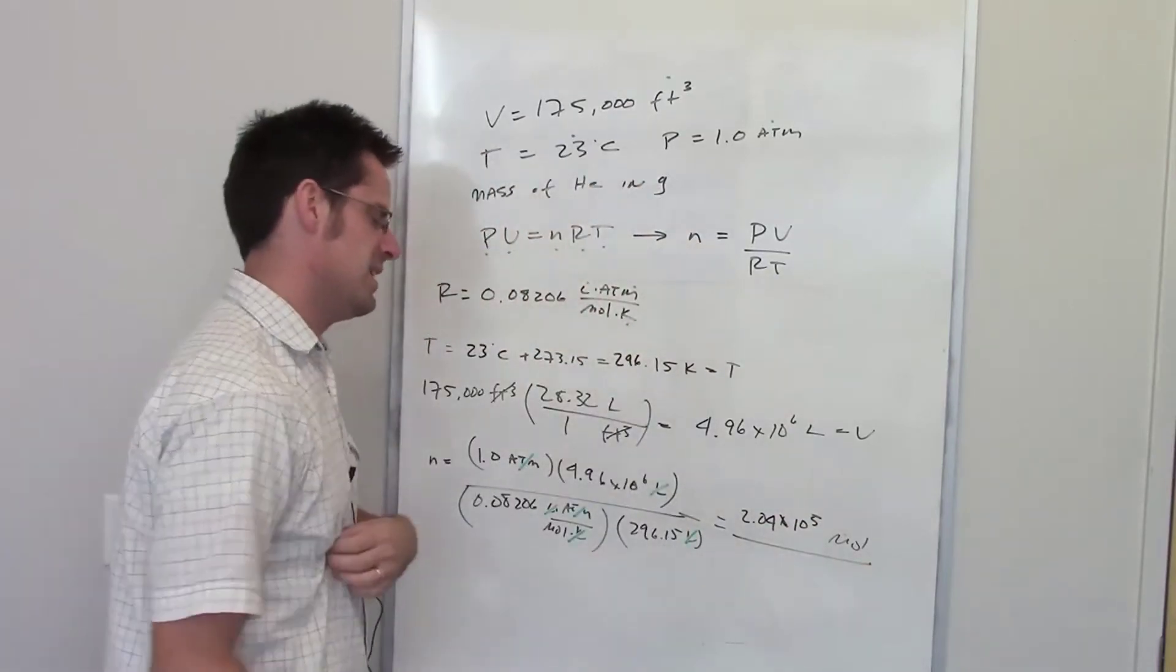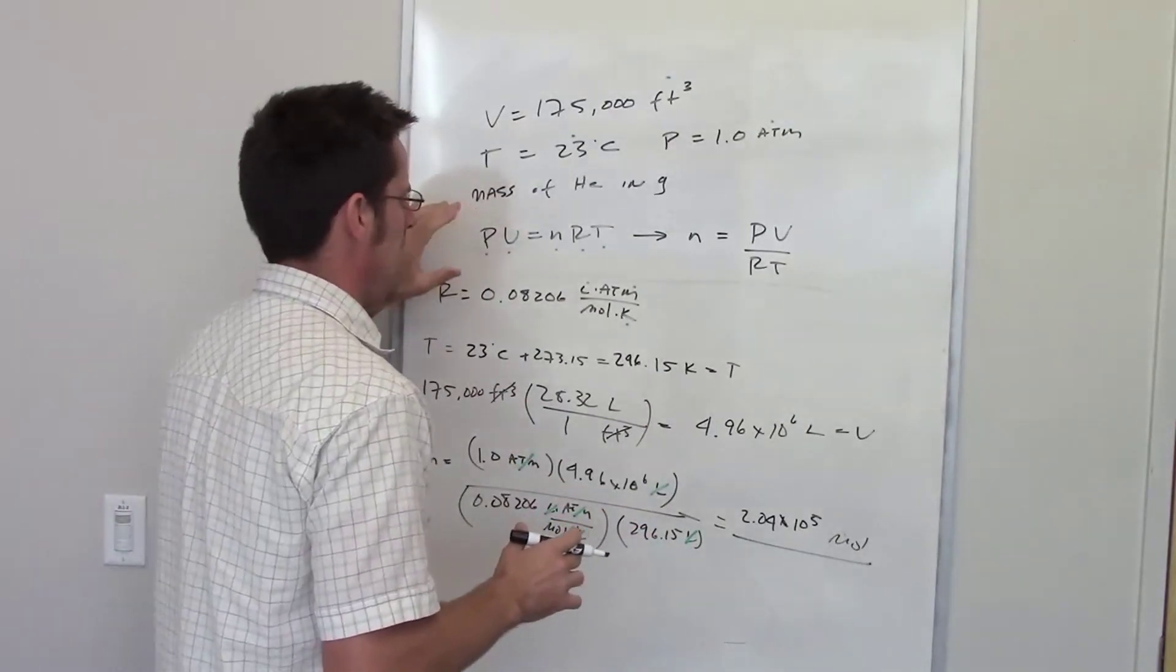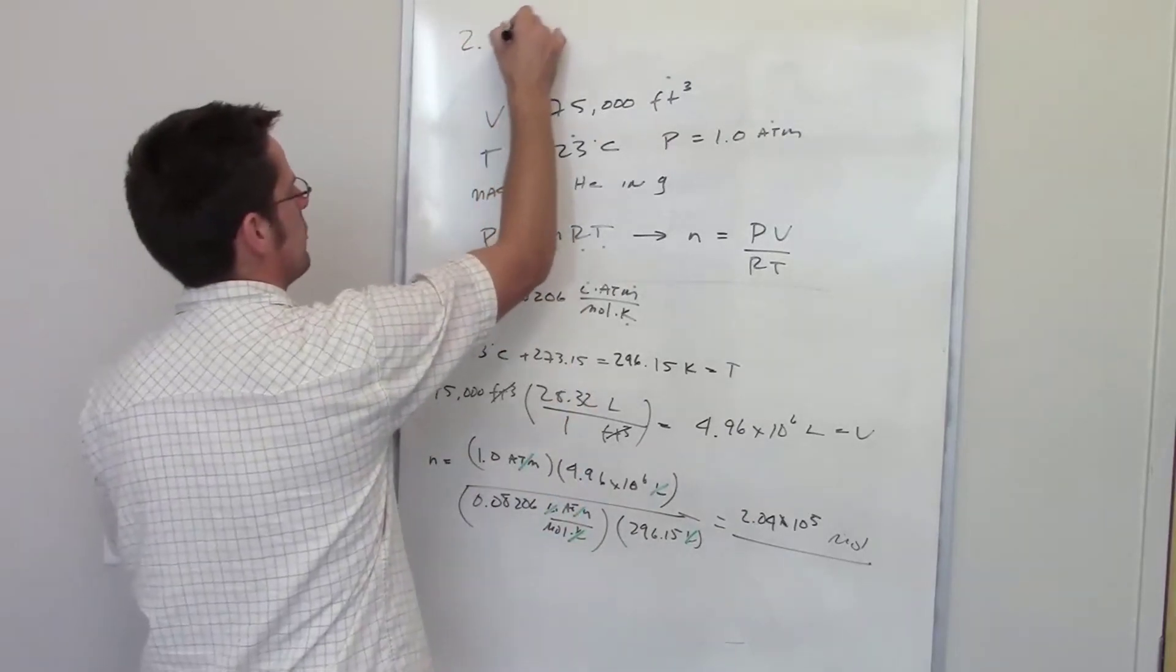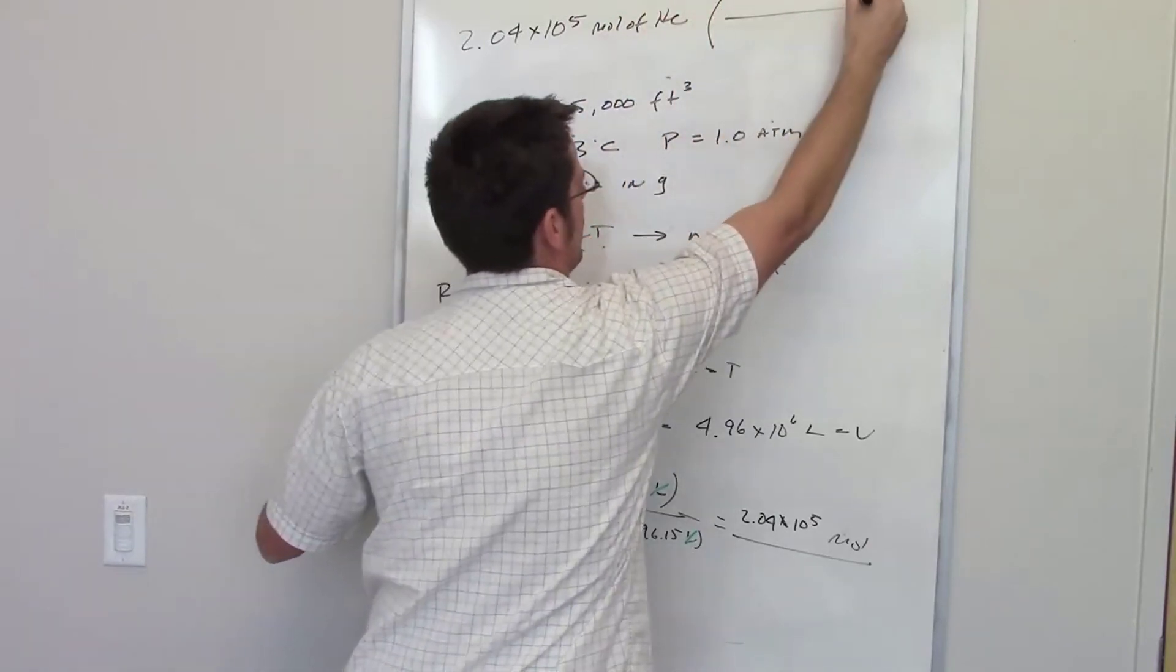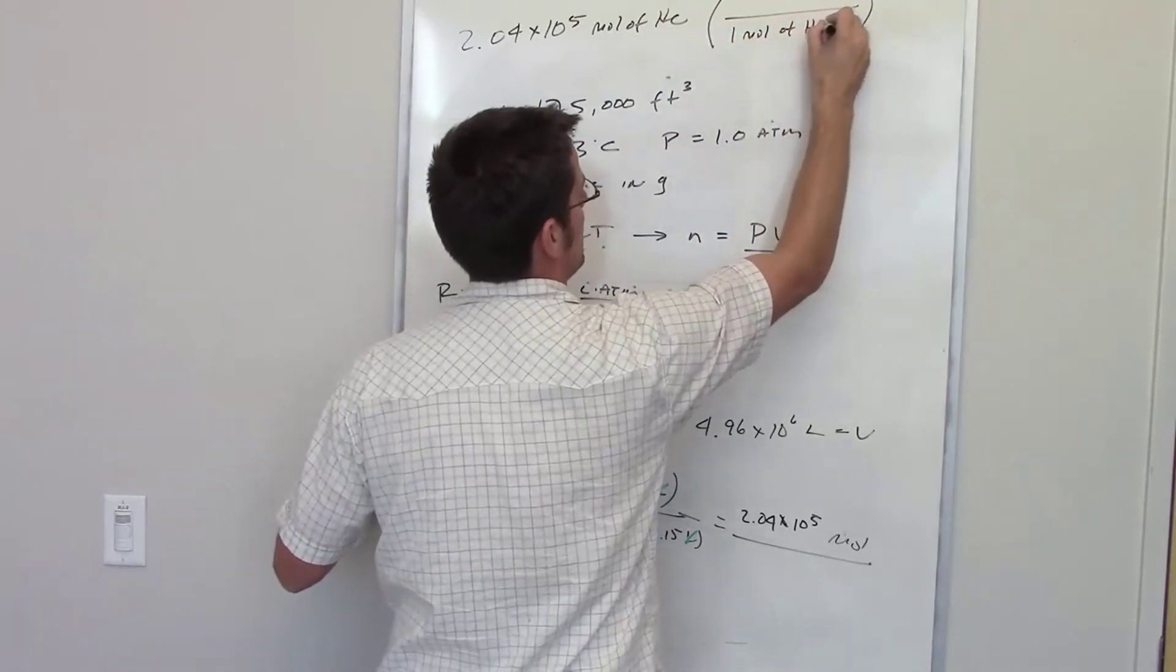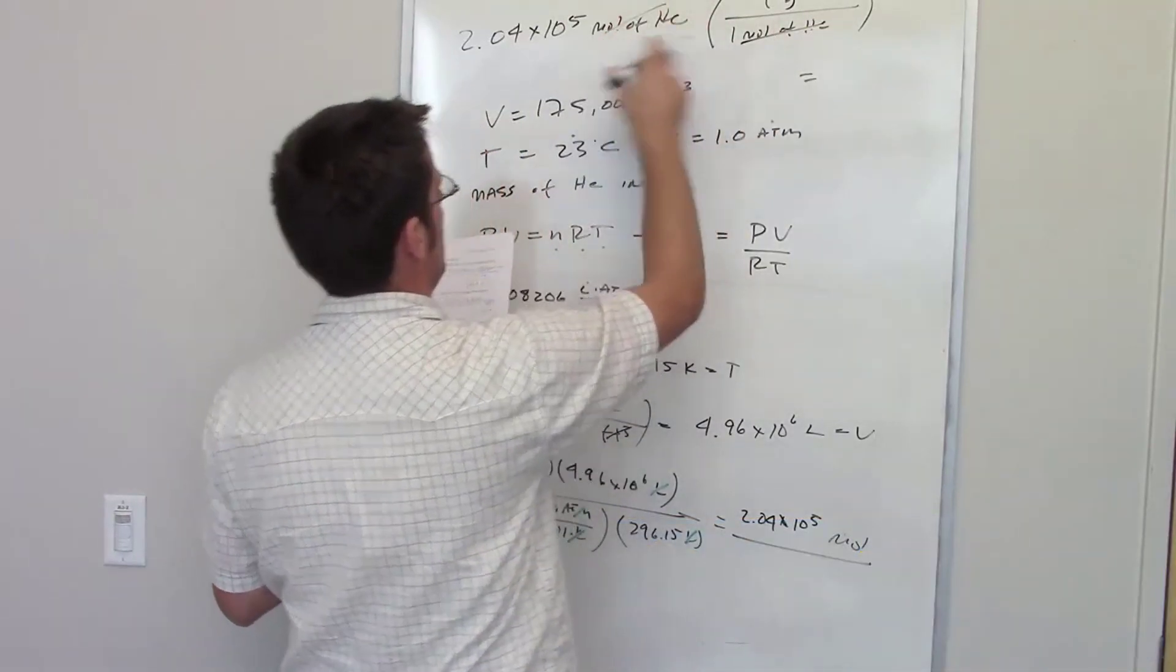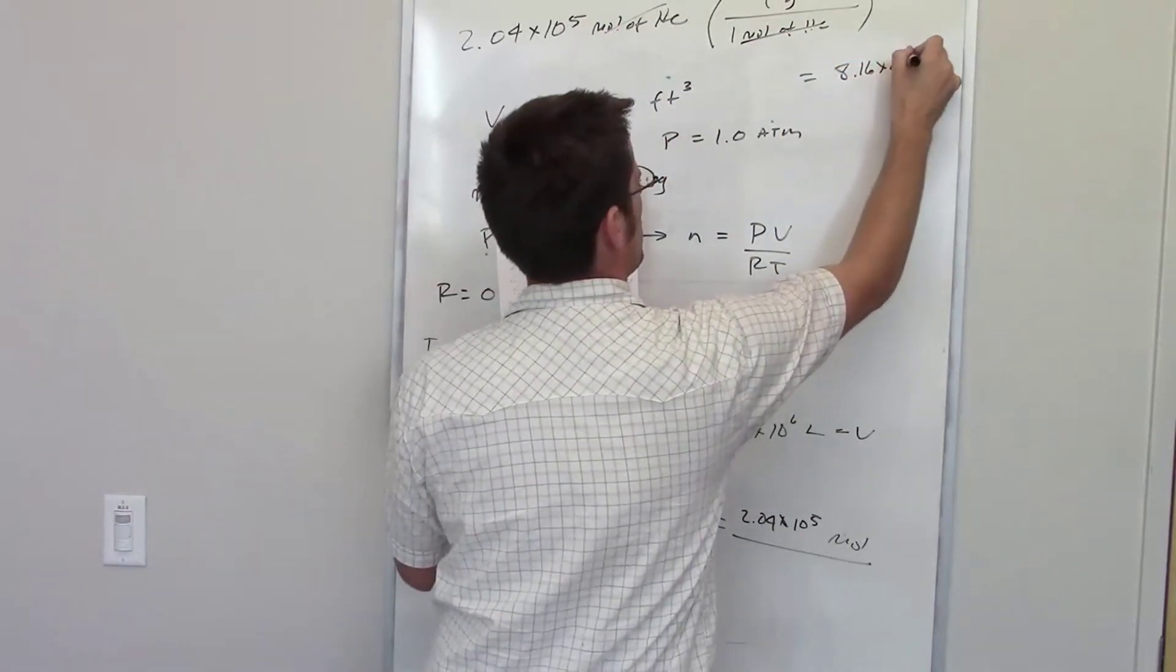Now, the question isn't asking me for moles, it's asking me for the mass. So how many grams is that many moles of helium? Well, to do that, I'm going to have to look at the periodic table and get its atomic weight. I've got 2.04 times 10 to the 5th moles of helium. If you look at the periodic table, one mole of helium weighs 4 grams. And I think I've got that right. You could take that out a couple decimal places if you wanted, but I'm not going to because I don't care. So I'll cross out moles of helium on the top and I end up getting 8.16 times 10 to the 5th grams.